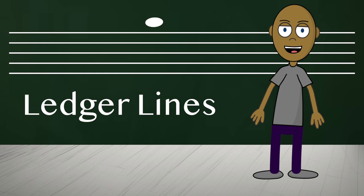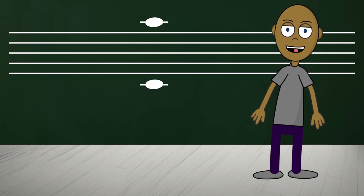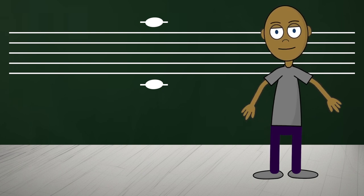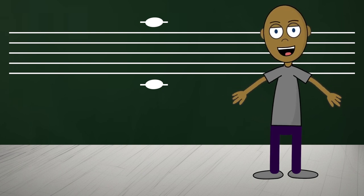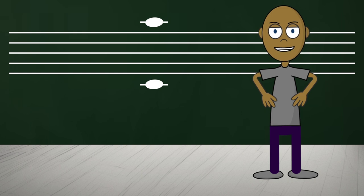You see, when notes are placed above or below the five lines of the staff, we use something called ledger lines to extend our musical range. These are additional lines that allow us to notate pitches that are too high or too low to be written on the staff itself.